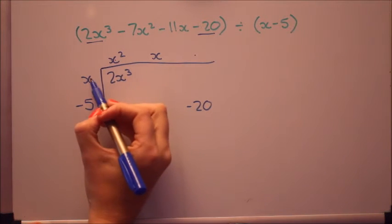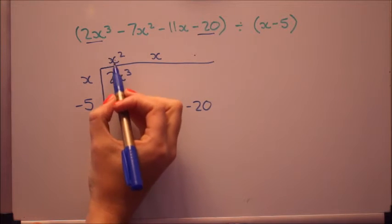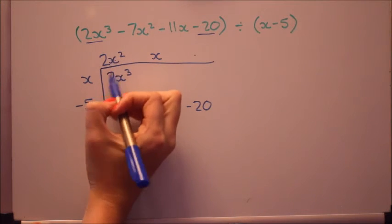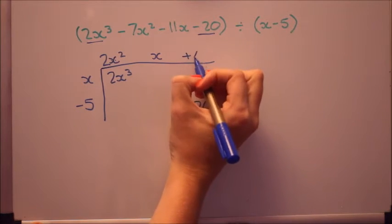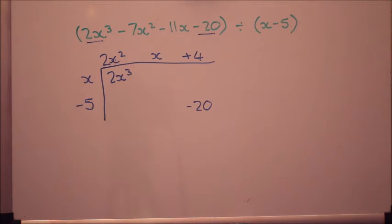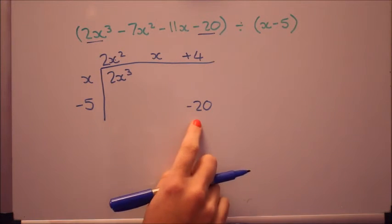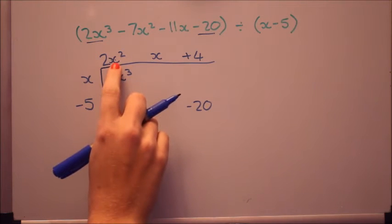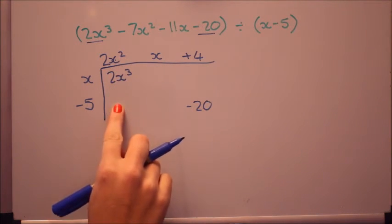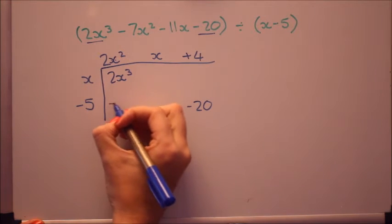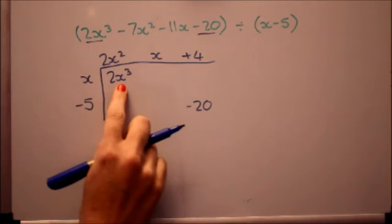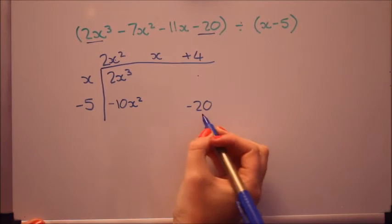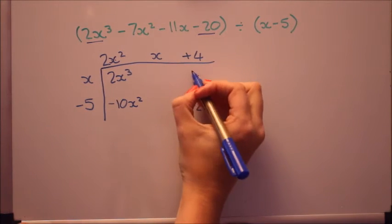Now to make 2x cubed it's got to be x times something to give 2x cubed so that's got to be 2x squared. And similarly here minus 5 times minus 20 it's got to be plus 4. The reason I like this method is it feels a little bit like a puzzle. So now we've got those two in place. We know that's 2x squared so now we can fill in this one here. That's got to be 2x squared times minus 5 is minus 10x squared. Similarly we can now fill in this one, it's x times plus 4 so that's 4x.